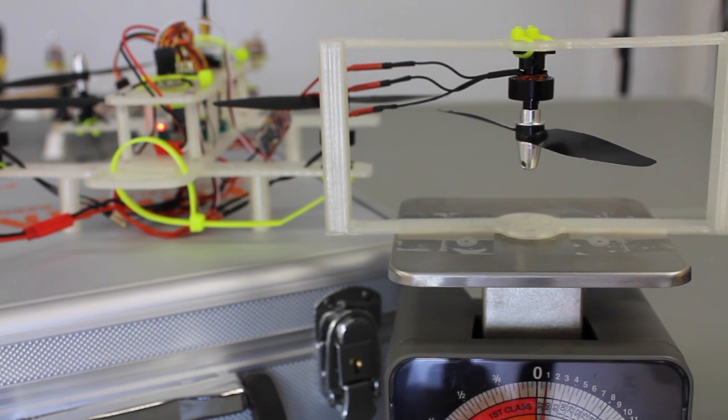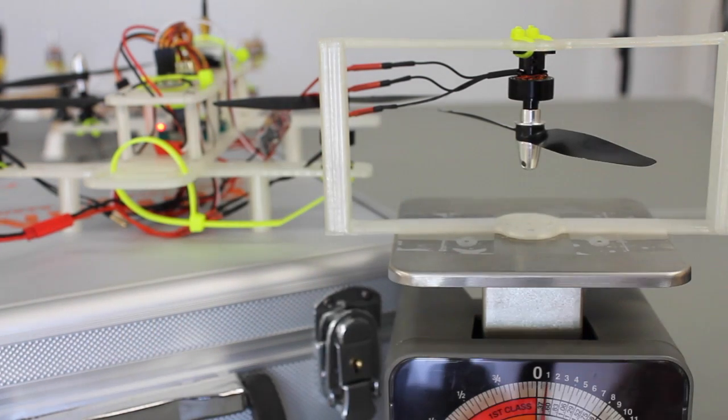We start at one, so six and a half ounces times four, I calculate is about 700 almost 750 grams of thrust. Once again this weighs about 350, so we definitely overcome that two to one thrust to weight ratio.